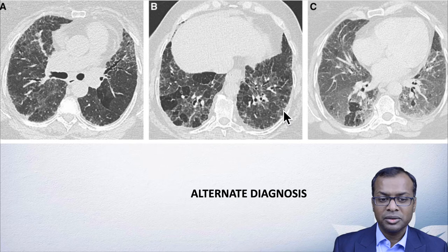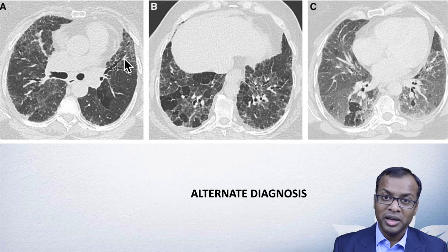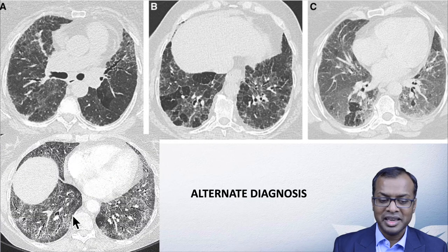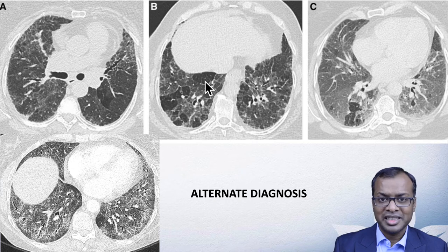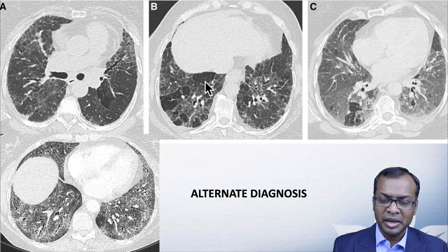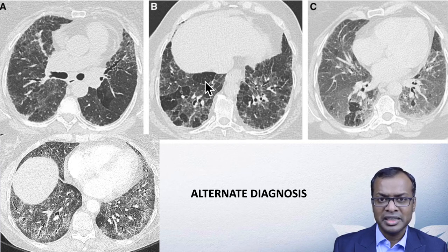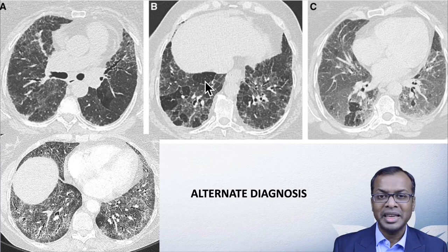Alternative diagnosis cases include extensive air trapping, lots of ground glass opacities, or central involvement — as seen in NSIP or hypersensitivity pneumonitis. The key is for everyone to first decide whether ILD is fibrosing or non-fibrosing, and then classify fibrosing disease as typical UIP, probable UIP, indeterminate for UIP, or inconsistent with UIP.